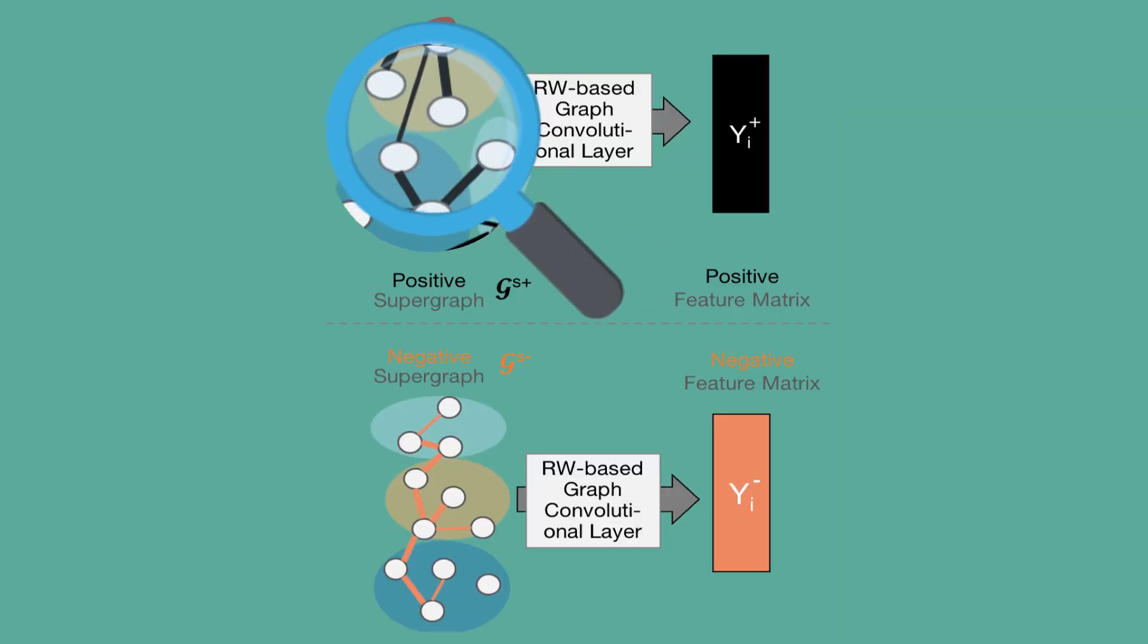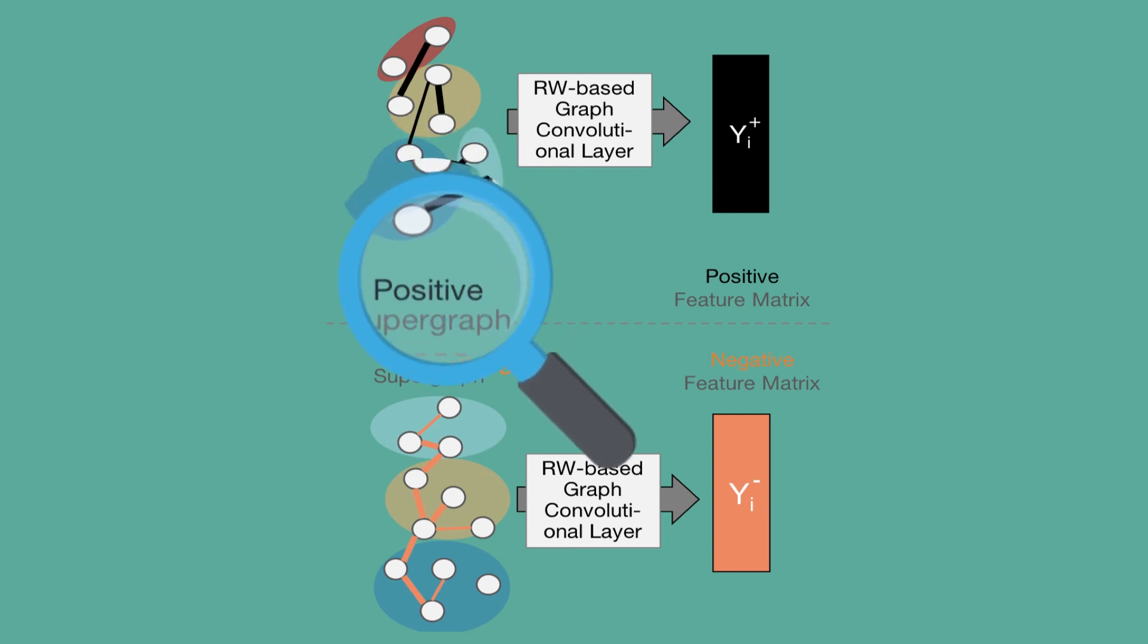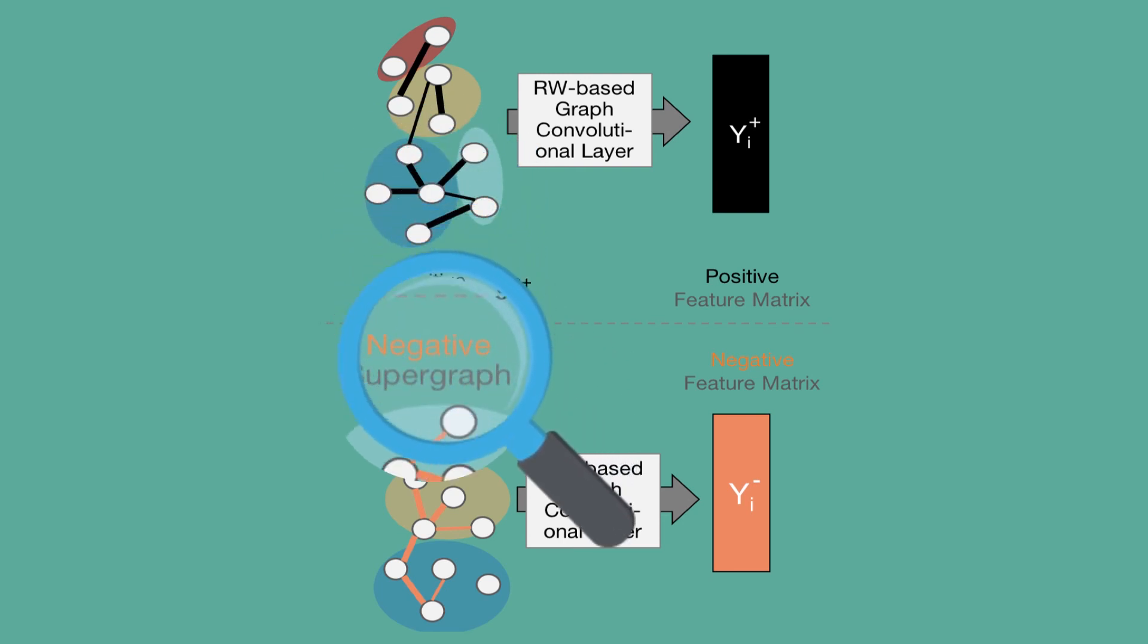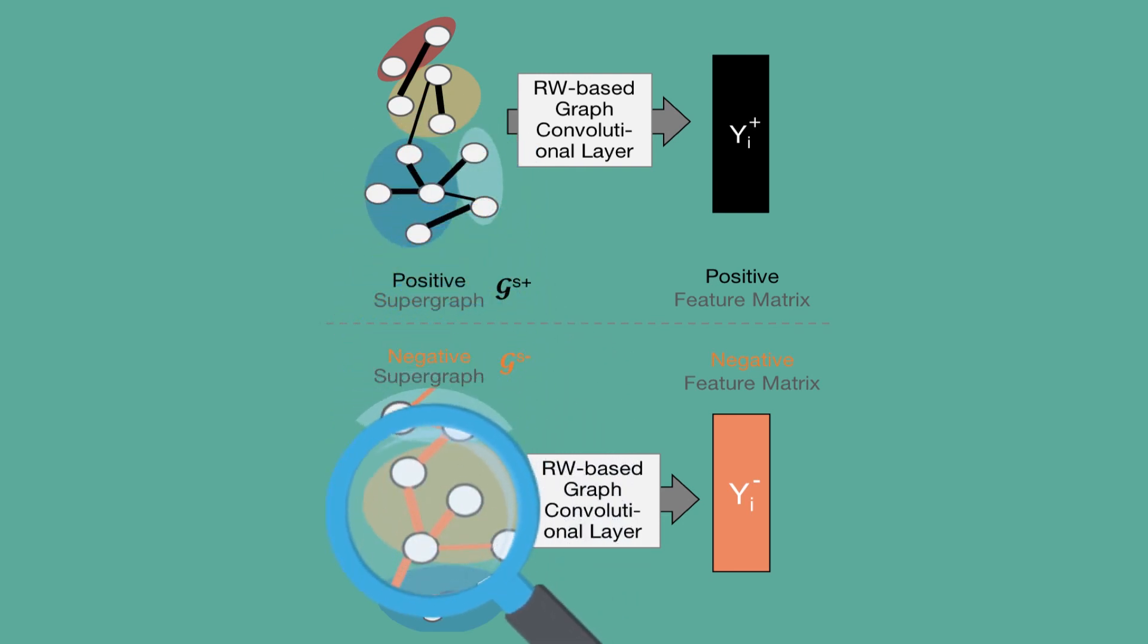Then, the random-walk-based graph convolutional layers capture structures within the coarsened graph as features for classification.